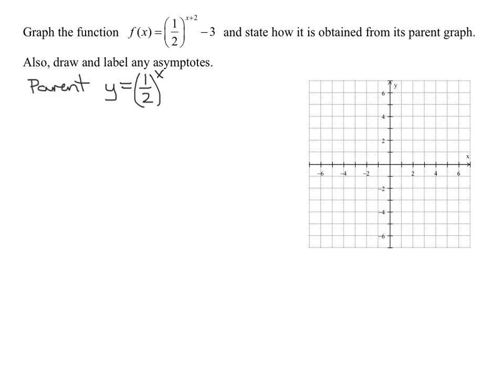I'm going to graph three accurate points, and the easiest ones to do for exponential functions are when x is negative 1, 0, and 1. So when x is negative 1, I'm plugging into my parent graph here. I'm going to get 1 half to the negative 1. If we ever have a fraction raised to a negative exponent, it's the reciprocal raised to the positive exponent. So the reciprocal of a half is 2, so 2 to the first is 2.